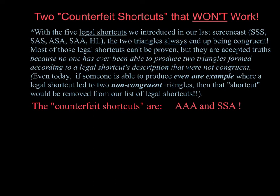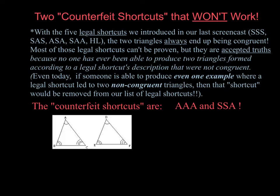Angle-angle-angle would mean that you have two triangles where all three angles in one triangle match up with the three angles in the other triangle. Though the two triangles might be congruent, angle-angle-angle does not guarantee that they are congruent. A visual example of angle-angle-angle is shown below, and we cannot conclude these two triangles are congruent.